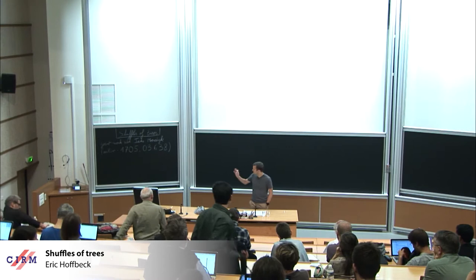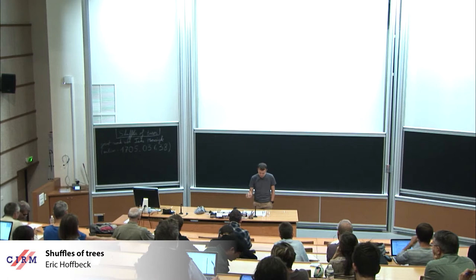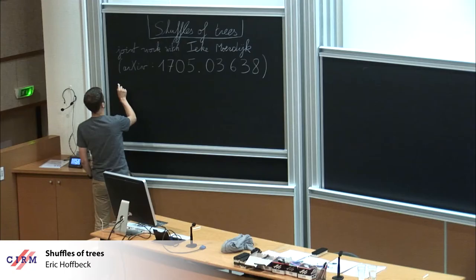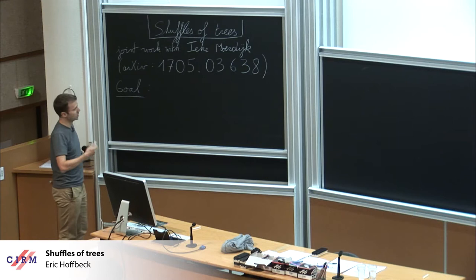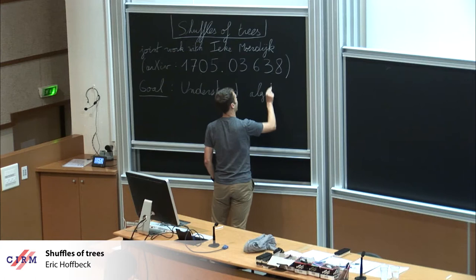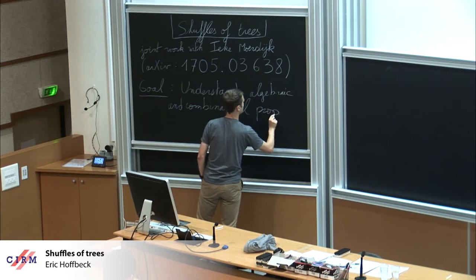I will talk about Shuffle of Trees. It's a joint work with Ieke Moerdijk. The work has been going on for quite a few years, but now the preprint is on the archive, so if you want to check, feel free. The goal for today: first we have to define this notion of Shuffle of Trees, but these Shuffles of Trees have some algebraic properties and some combinatorial properties, and that's our goal — we want to understand the algebraic and combinatorial properties of these shuffles.